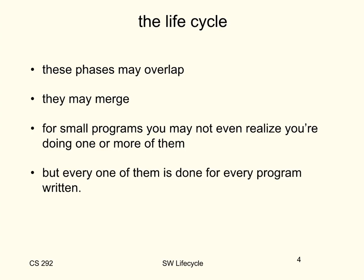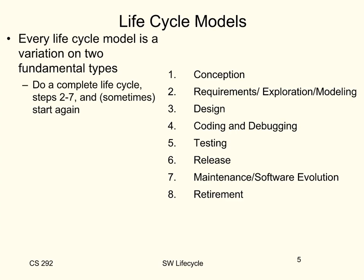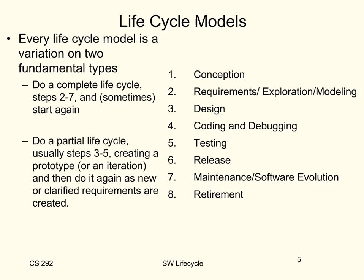Every life cycle model that we will talk about is a variation on two fundamental types. The first is where you do a complete life cycle — steps two through seven — and then you're done, sometimes starting again if you have another version. Or you do a partial life cycle, usually steps three through five, creating a prototype or what's known as an iteration, and then you do it again having clarified requirements and done some testing, and keep doing that until you're ready to release. All life cycles are basically one of these two kinds: the first is called plan-driven or development-driven, and the second is called an iterative model.